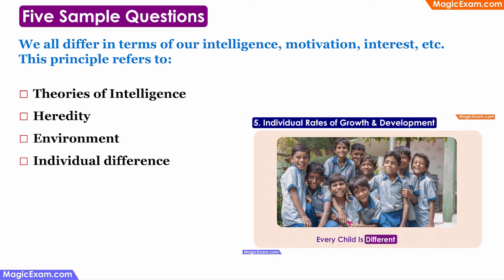The last question: 'We all differ in terms of our intelligence, motivation, interest, etc. — this principle refers to which of the following?' Previously we studied that every child is different because we all have individual rates of growth and development. The type and rate of development of every child will be different. Therefore, we are talking about individual differences here, and that is the correct answer.